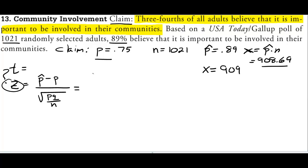So we can plug all these things in 0.89 minus 0.75 all over the square root of 0.75 times 0.25 all over 1,021.